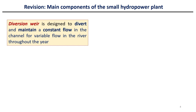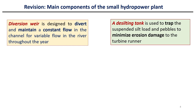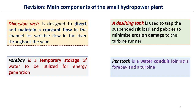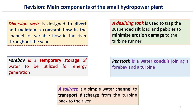The diversion weir is designed to divert and maintain a constant flow in the channel for variable flow in the river throughout the year. A de-silting tank is used to trap the suspended sediment load and pebbles to minimize erosion damage to the turbine runner. The forebay tank is a temporary storage of water to be utilized for energy generation. A penstock is a water conduit joining a forebay and a turbine. A tailrace is a simple water channel to transport discharge from the turbine back to the river.